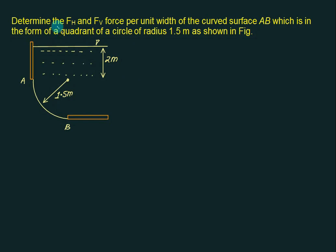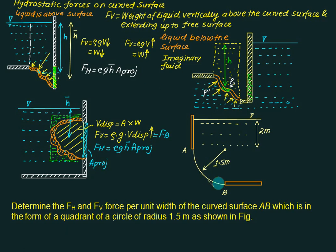Determine the FH and FV force per unit width on surface AB as shown in the figure. The curved surface is in the form of a quadrant of a circle of radius 1.5 meter. The curved surface is a form of circle so it will not displace any quantity of liquid. The height is given as 2 meter and the radius is 1.5 meters. The liquid is really present above the gate, so this corresponds to situation number 1.